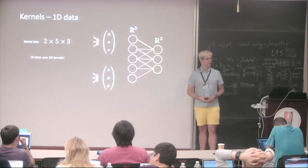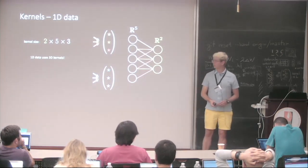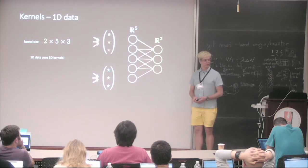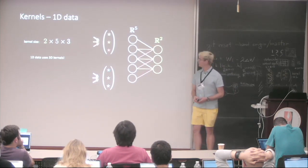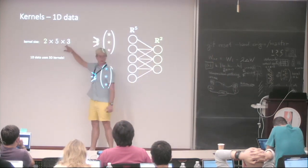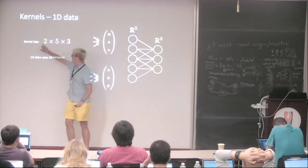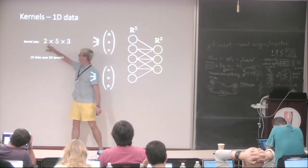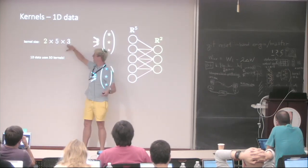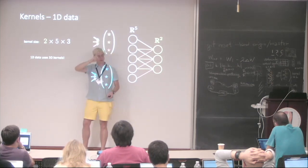Student question: If you add a third set of kernels with three colors, would it be 3×5×3? Yes — three kernels, five input features, connection size of three.